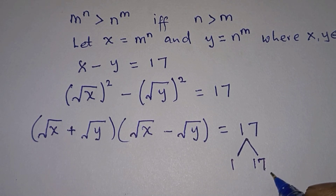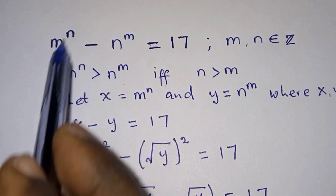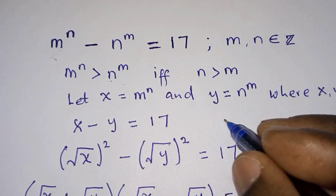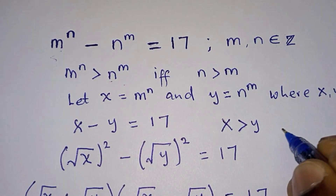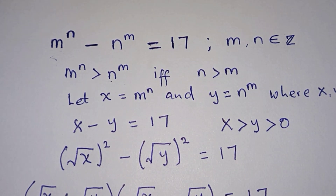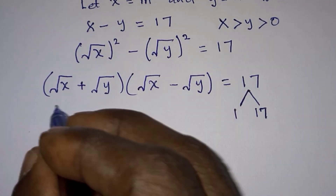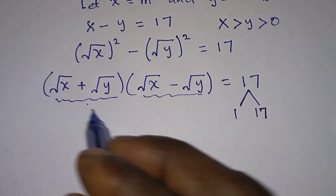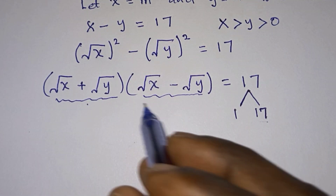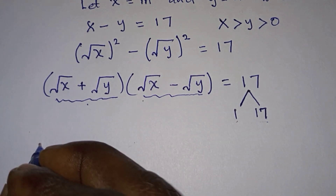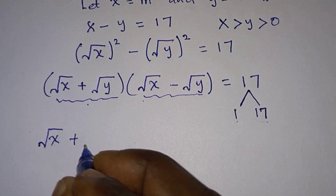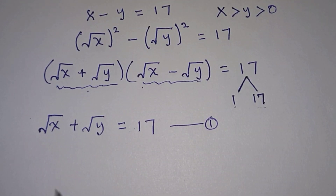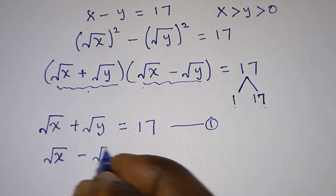Since 17 is prime it has only two factors: one and the number itself. From this equation we represented the left factor by the larger expression and the right by the smaller. Since x is greater than y and y is greater than zero, we won't consider negative factors. So we can form two equations: square root of x plus square root of y equals 17 as equation one.